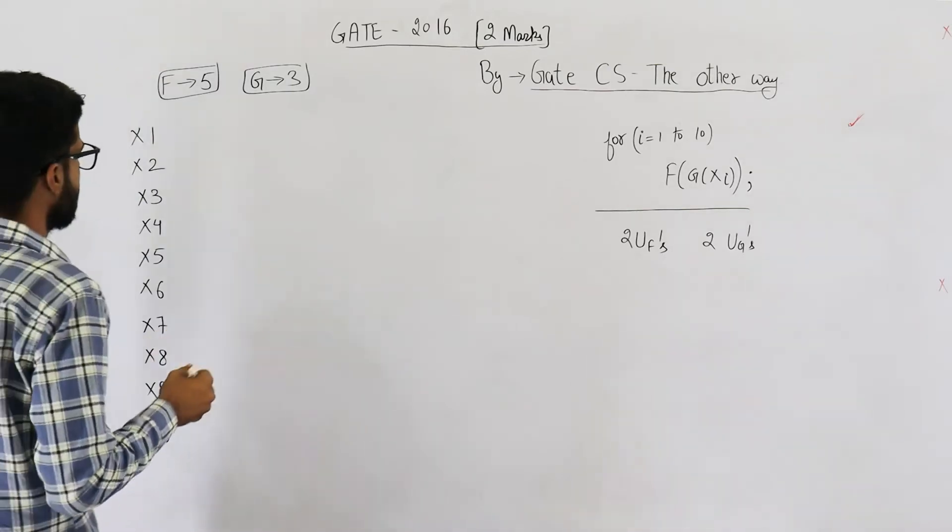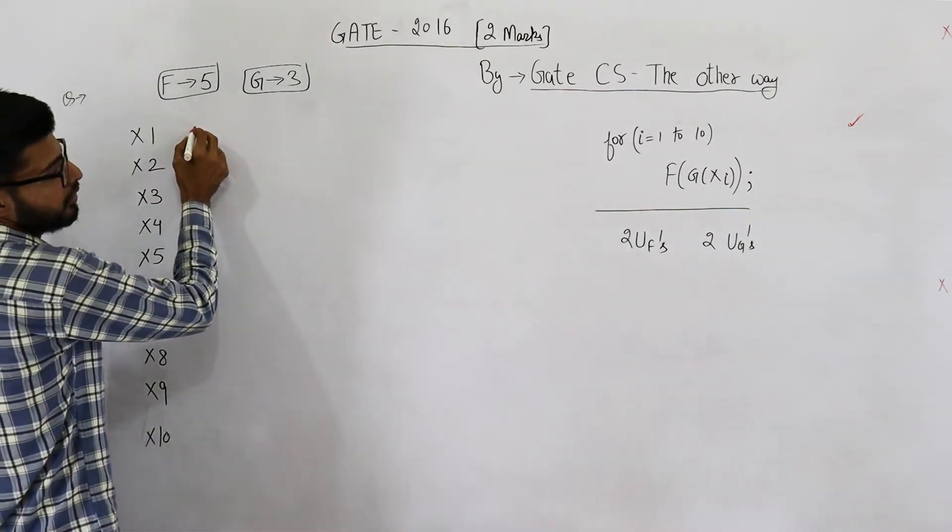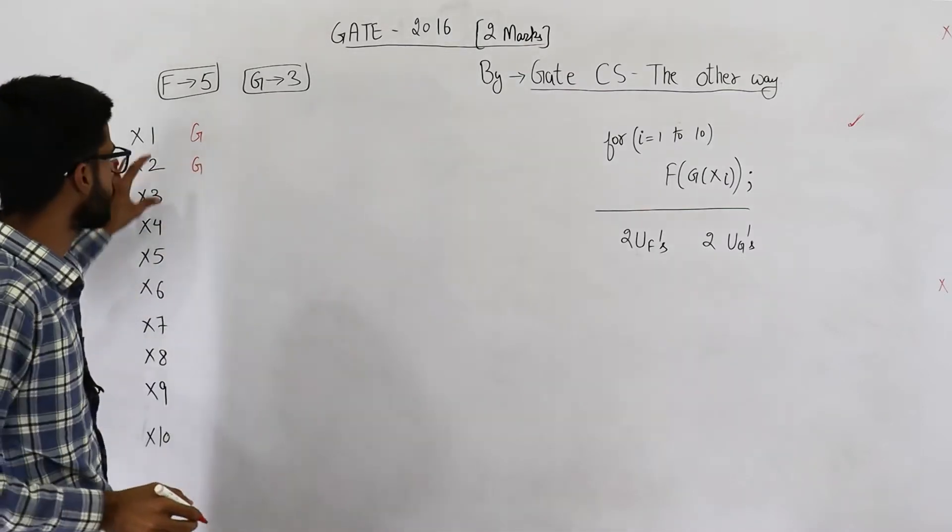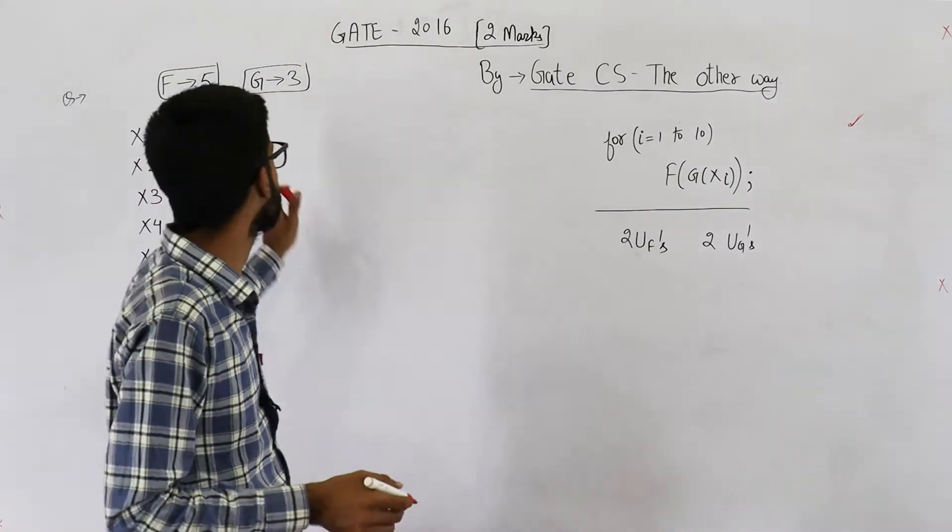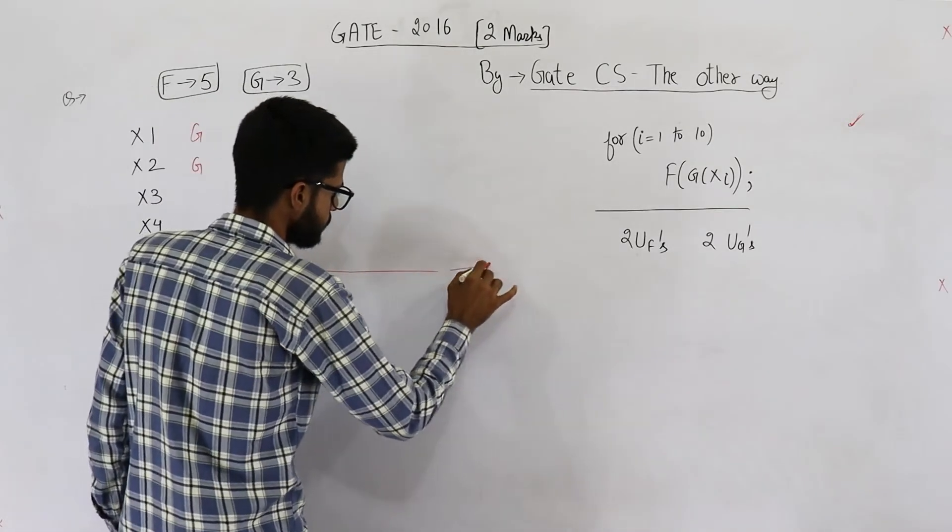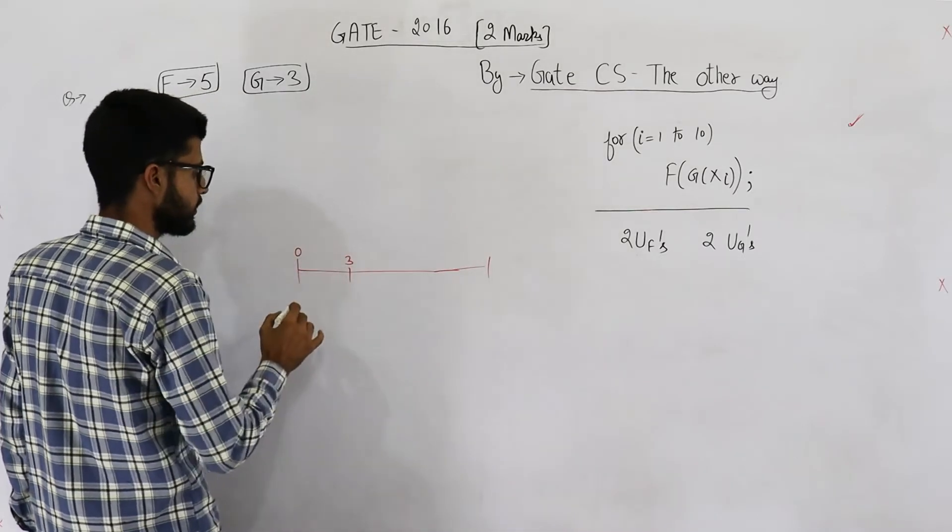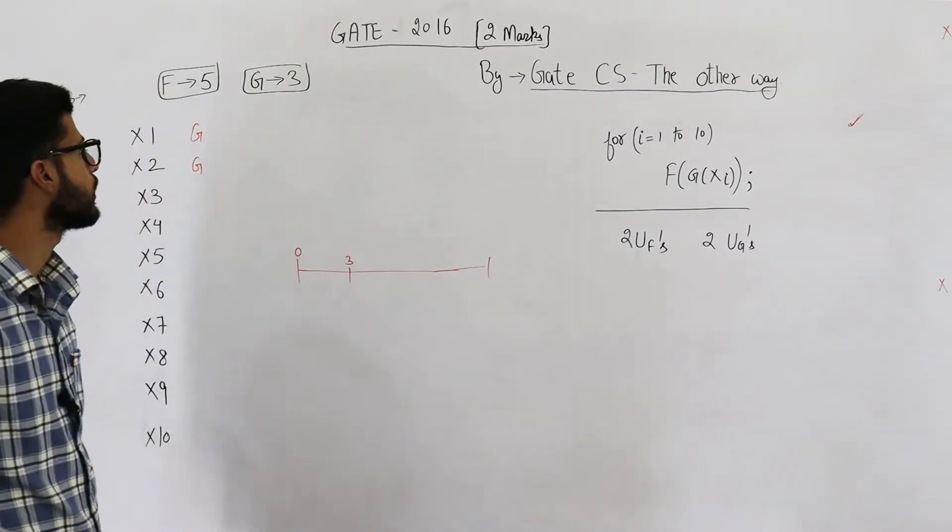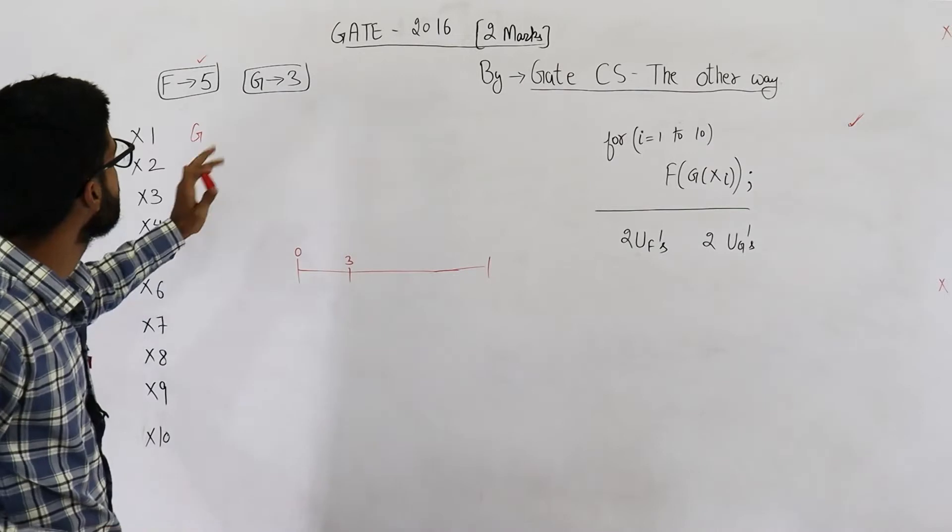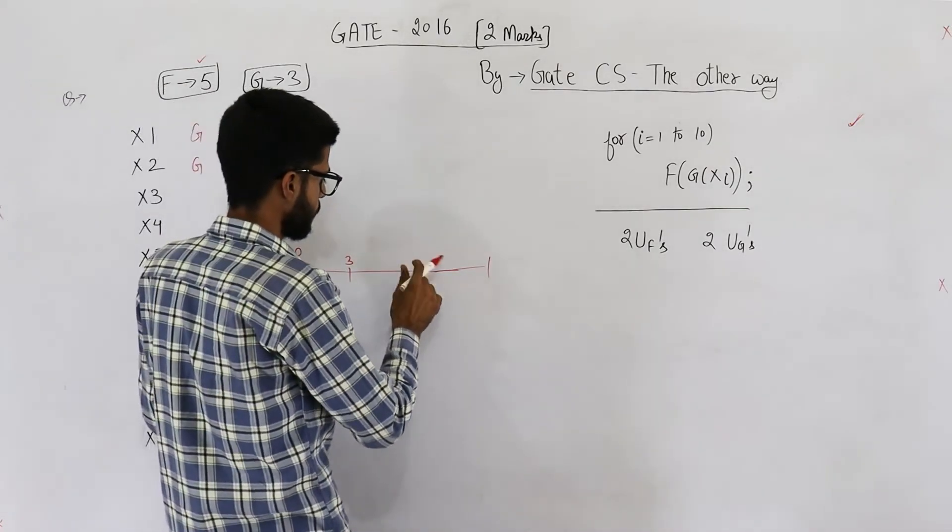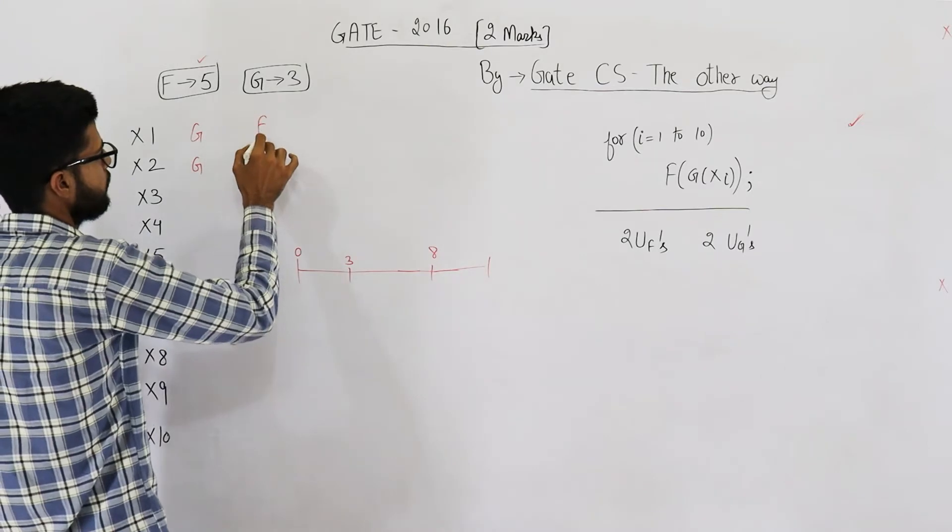You guys might think that because we have two units of g as well as f, we can use a unit of g here and here. Both of these units will be computing g of x1 and g of x2 in parallel and hence in total they will take 3 seconds. That means from 0 to 3 seconds, these two computations will be done and after that from 3 to 8 seconds, this unit requires 5 additional seconds. In this time, you can compute f.